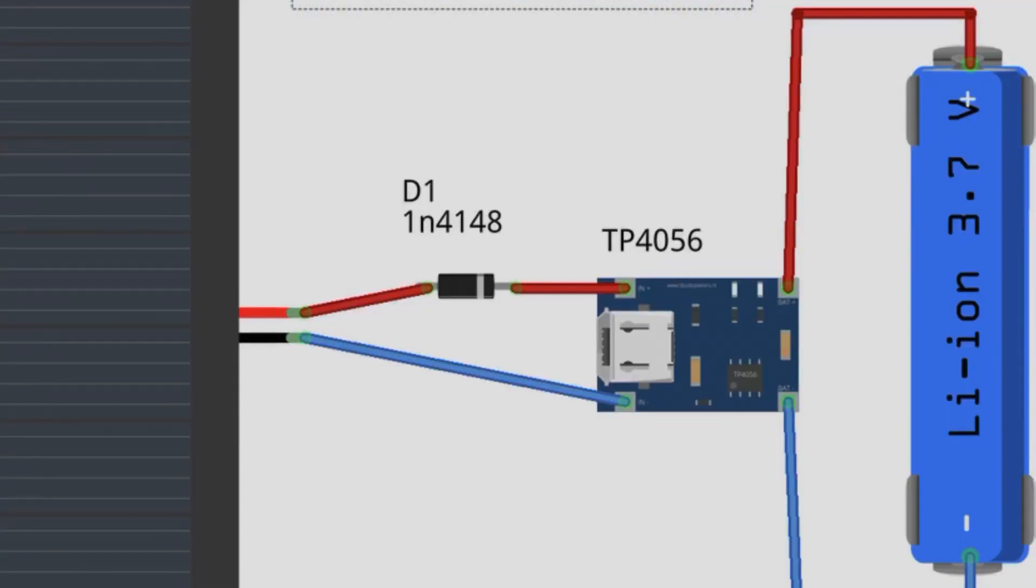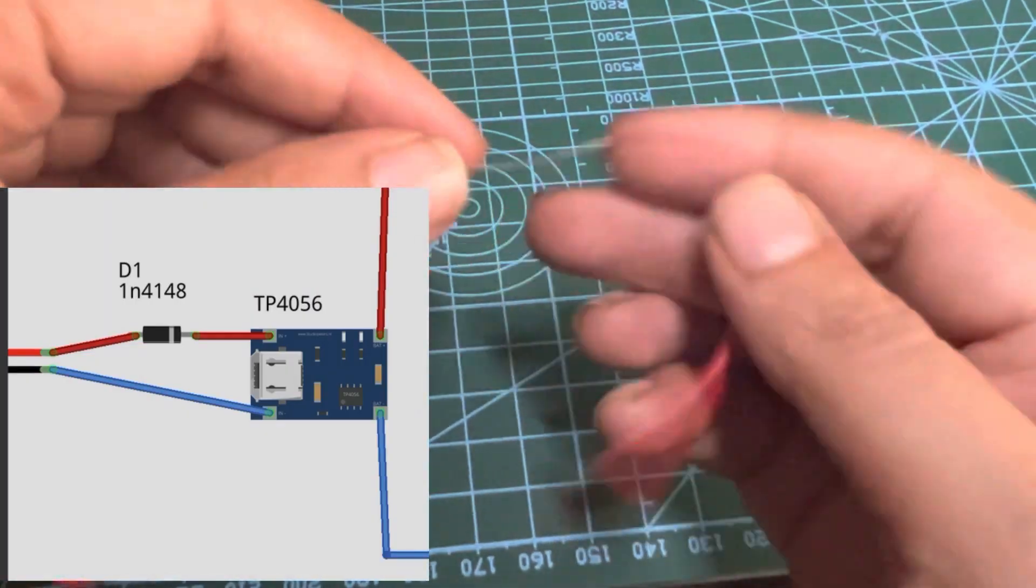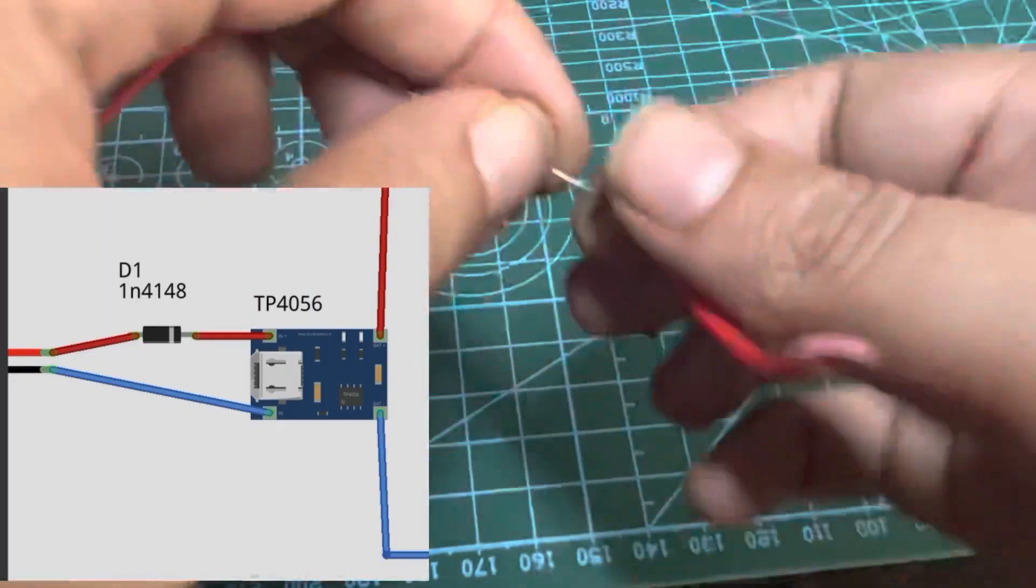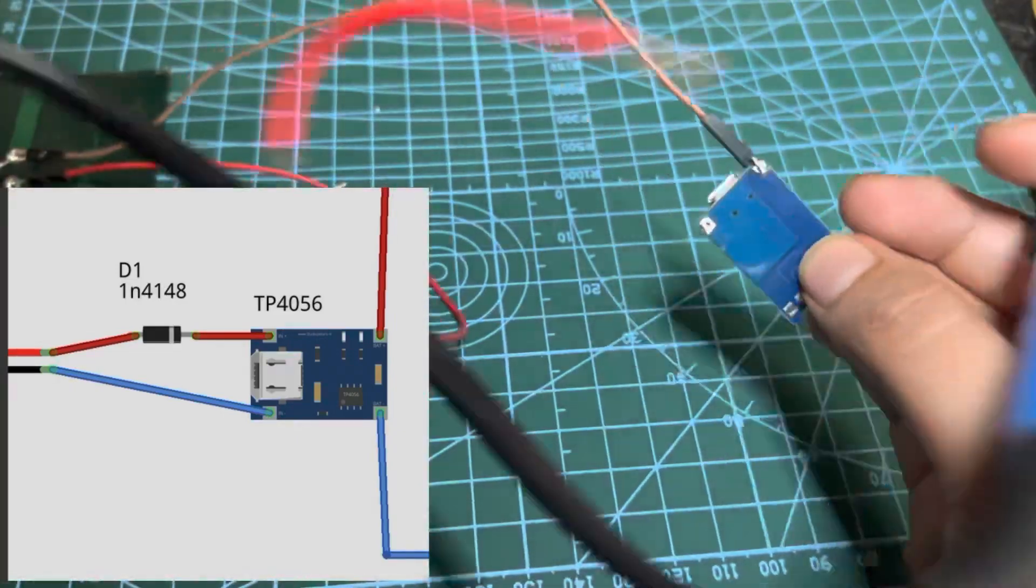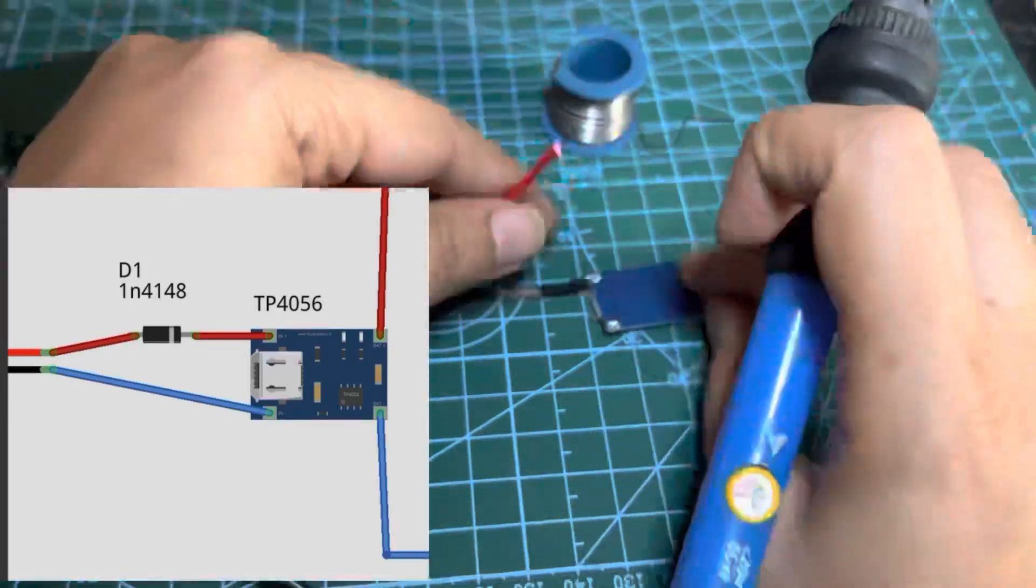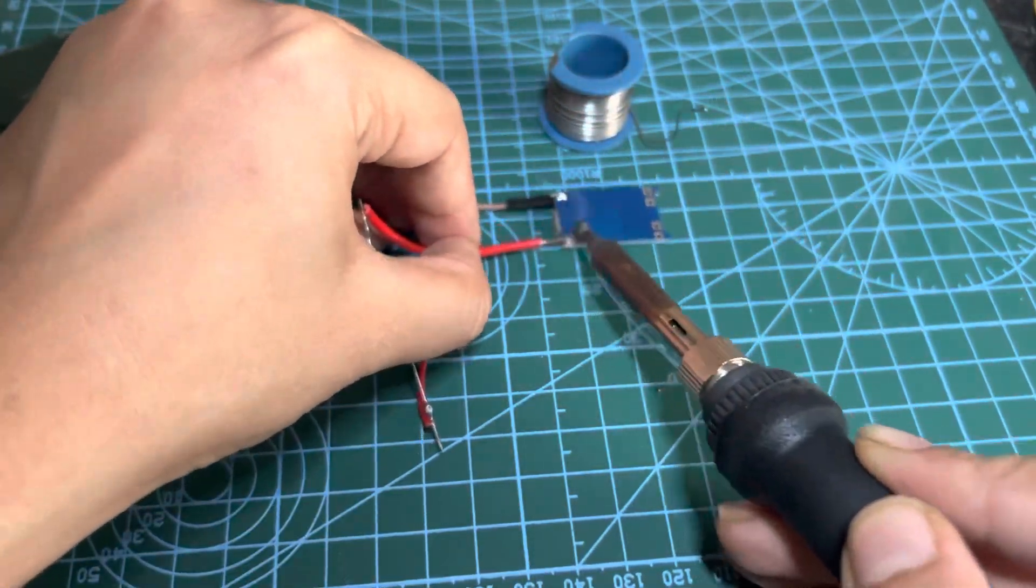Now coming to the second part, here we have connected the positive end to the diode to avoid the reverse flow of current. The negative terminal of the solar panel is connected to the negative of the TP4056 charging module.